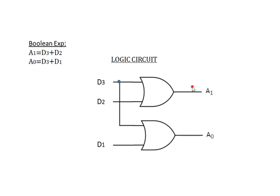Next, this is the logic circuit for the 4-to-2 encoder. For A1, we take D3 + D2 using an OR gate. Similarly, for A0, we take D3 + D1 using another OR gate. This is the complete 4-to-2 encoder circuit.